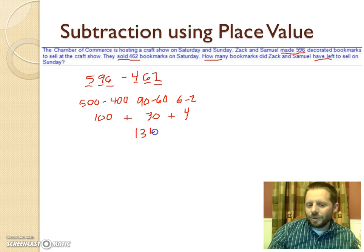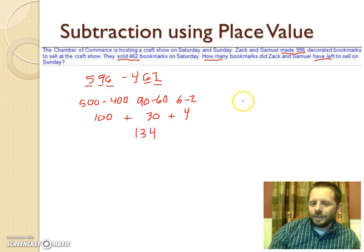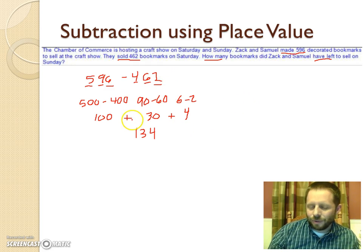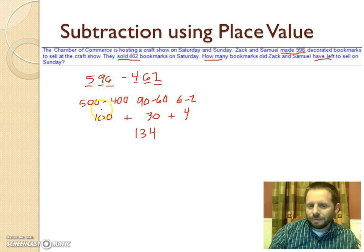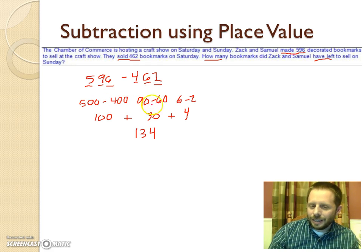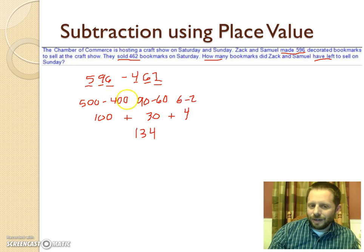There are 134 bookmarks remaining to sell on Sunday after subtracting 462 from 596. This is a nice easy way to get manageable numbers - just take the place value for each digit and subtract the like place values.